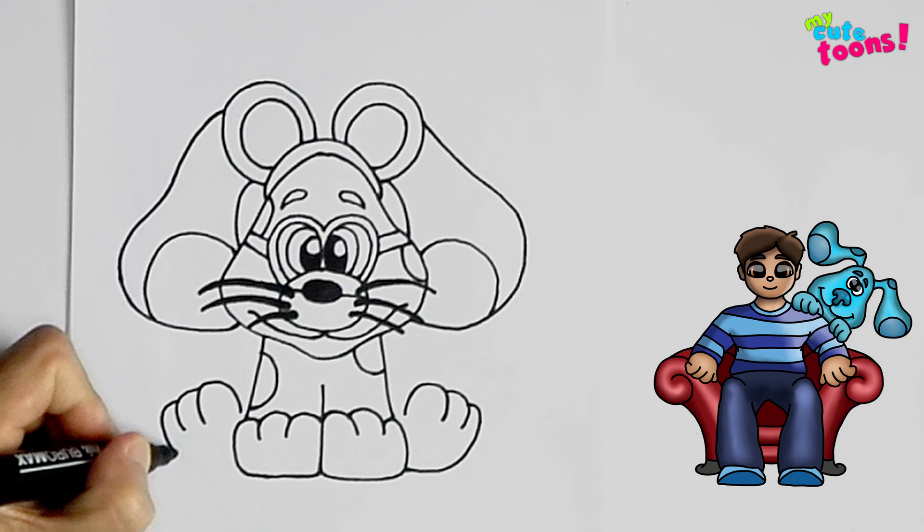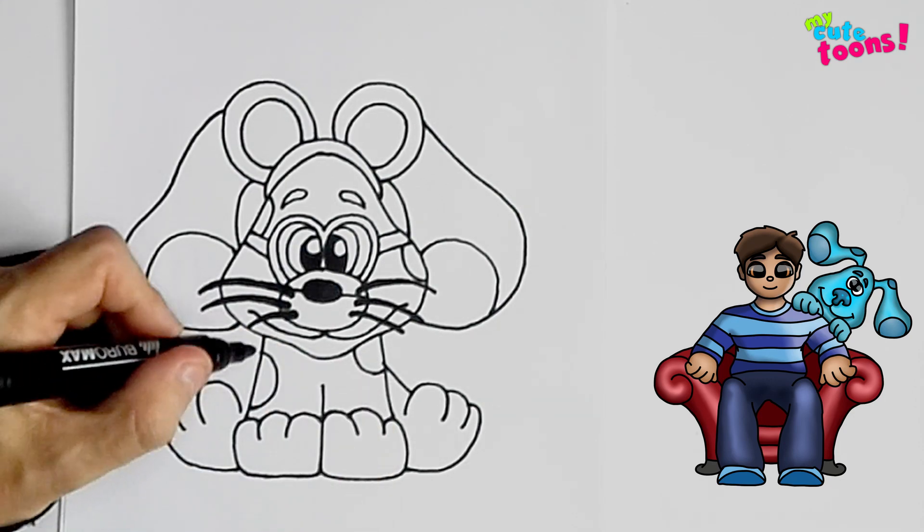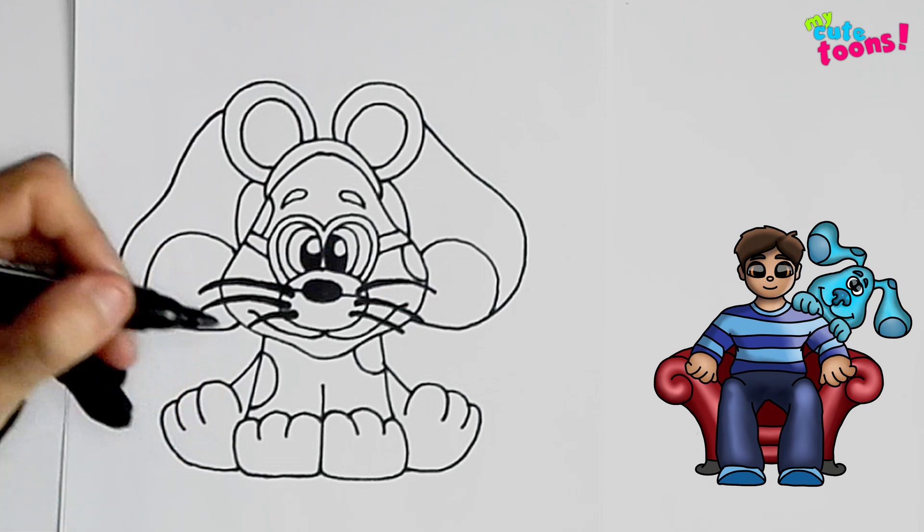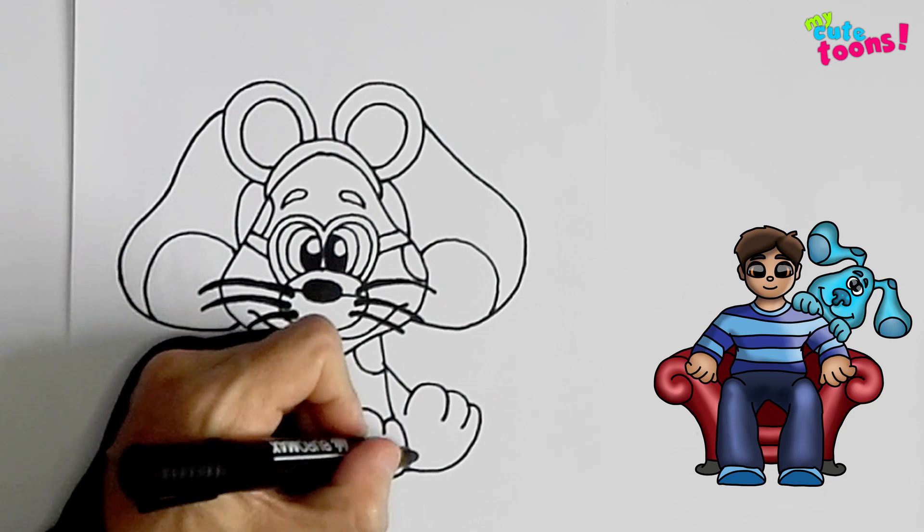Let's do the same on this side. Bring it back. And then we're just going to make two little lines going out like that. Two spots underneath the back paws.